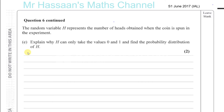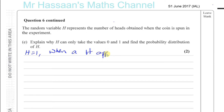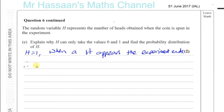The fact that the experiment stops when the first head appears means H can equal 1, because when a head appears the experiment ends. Therefore H cannot be more than 1, because the experiment ends once H equals 1.